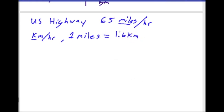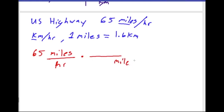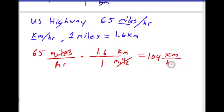We have 65 miles over hours. Miles on top means miles on the bottom of our conversion fraction, with 1.6 kilometers on top. Multiply through — miles cancel out — and we're left with 104 kilometers per hour.